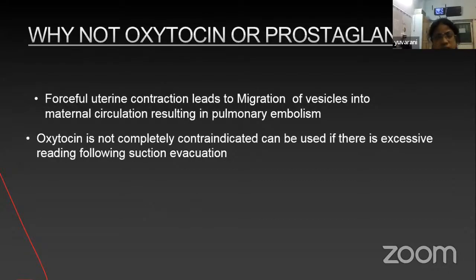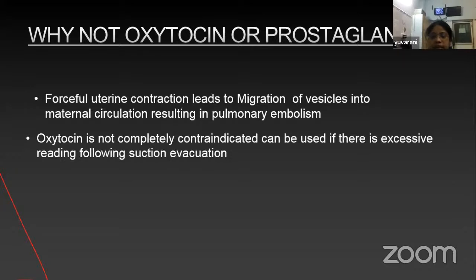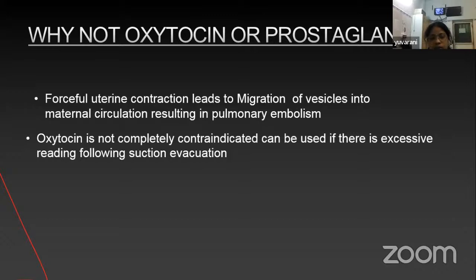Regarding why not to use oxytocin or prostaglandins before evacuation: using oxytocin before evacuation may cause forceful uterine contractions, leading to migration of trophoblastic cells into the maternal circulation and resulting in pulmonary embolism with dyspnea as a medical emergency. However, oxytocin can be used post-evacuation if there is excessive bleeding following the procedure.